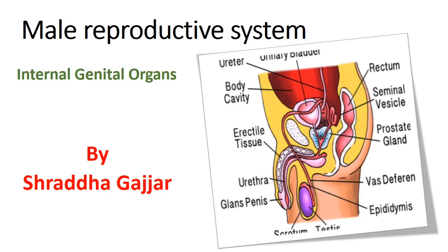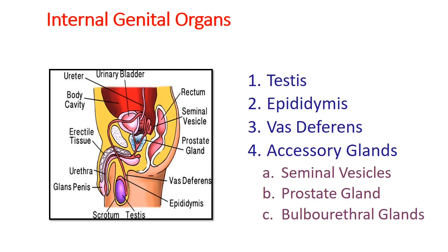Hello guys, today we continue the male reproductive system. In the previous lecture we learnt about the external genital organs. Now today we are going to learn about the internal genitals of the male reproductive system. The internal genital organs are the testes, epididymis, vas deferens, and the accessory glands — the seminal vesicles, prostate gland, and bulbo-urethral glands.